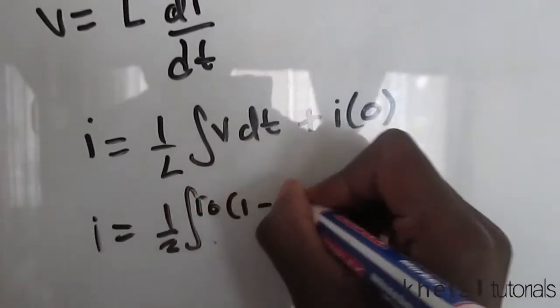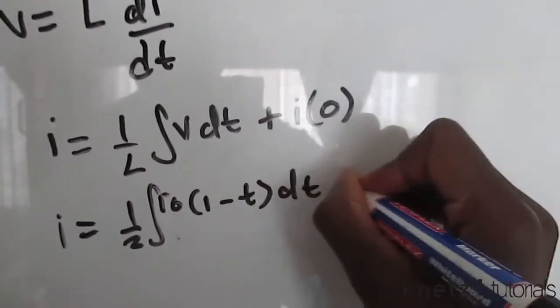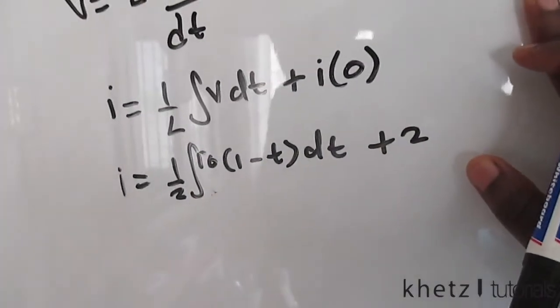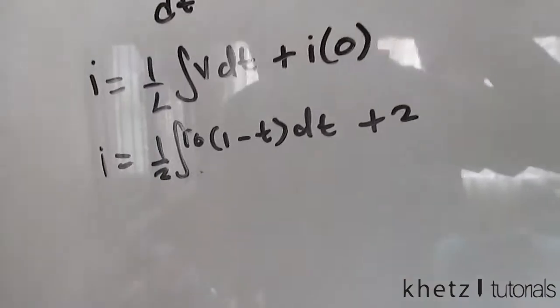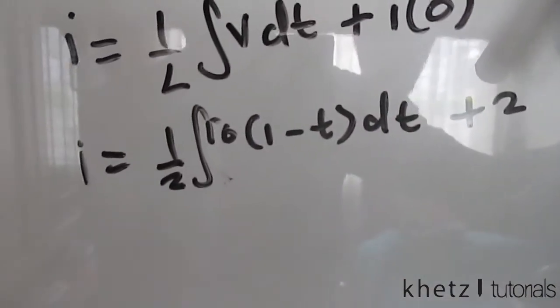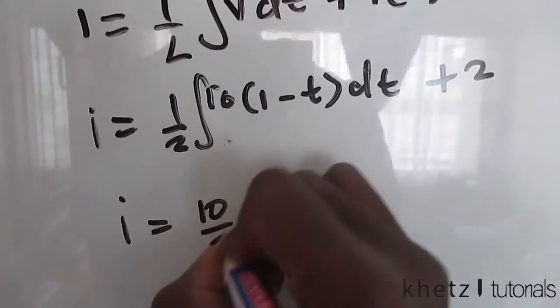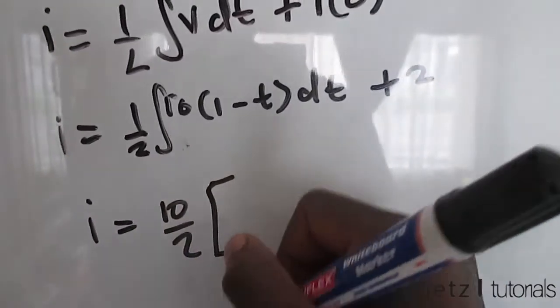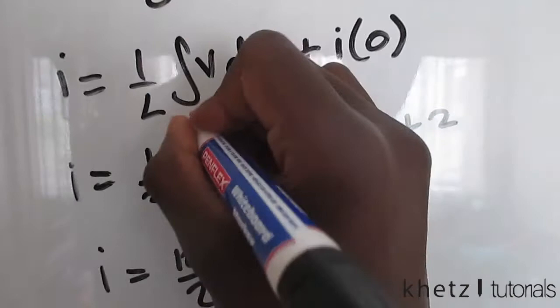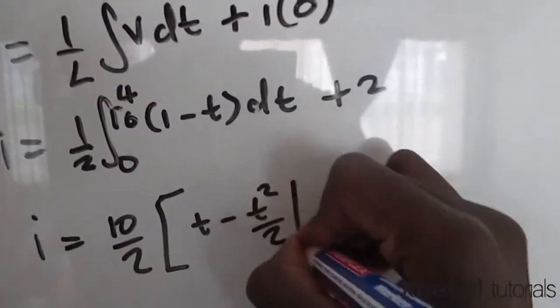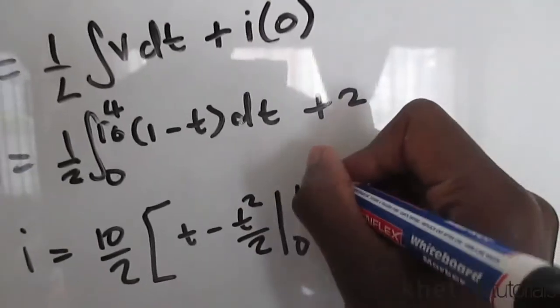So that is that and we're just going to proceed to do the integral. So i is equals to 10 over 2 multiplying everything inside, the limits from 0 to 4. We are going to have t minus t squared divided by 2 from 0 to 4.